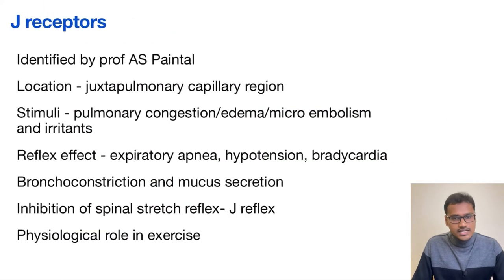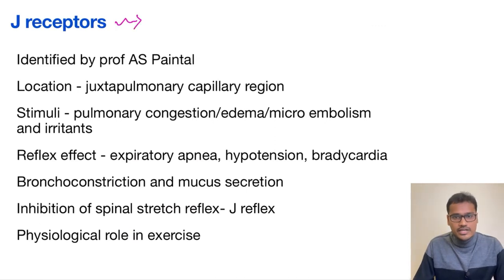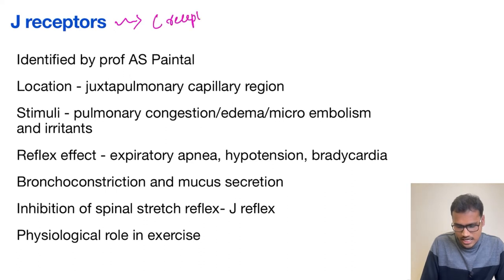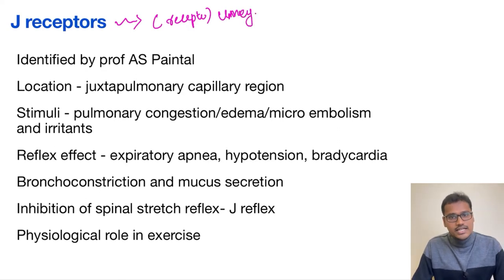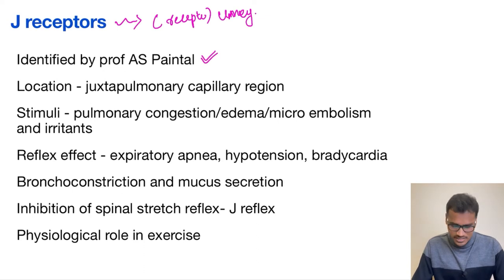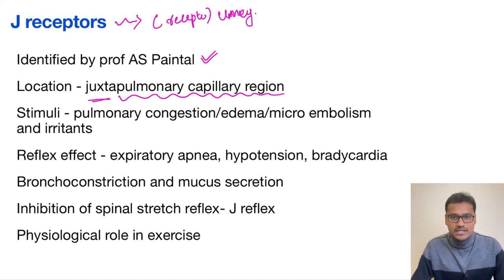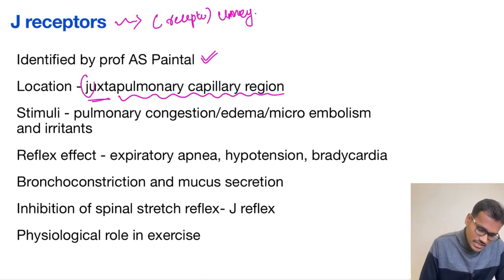Now coming to the last receptor — the J receptors, also called pulmonary or bronchial C receptors. These are unmyelinated fibers, identified by the Indian scientist Professor A.S. Paintal. They are located very close to the pulmonary capillary region, also called the juxtapulmonary region — that is why they are given the name J receptors.